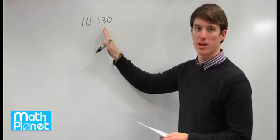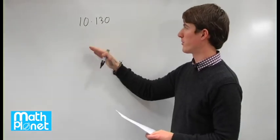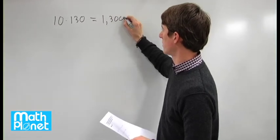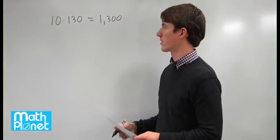So each number isn't necessarily 130, but if you add them all together, you'll get 10 times 130, which is 1,300. That's the total number of points in the system.